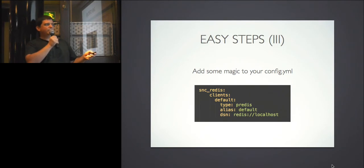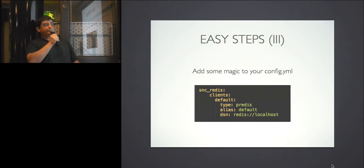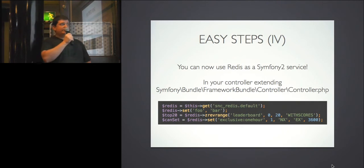Under clients you define one or many. You put a key — it's good practice to keep the same key as the alias. The alias is the string used by Symfony to create services. You specify predis or phpredis depending on which one you use, and the DSN is basically redis:// followed by your network address. Once this is done, you can use Redis as a Symfony 2 service.